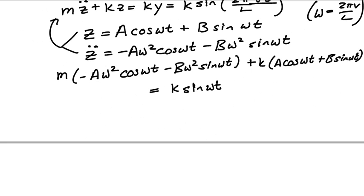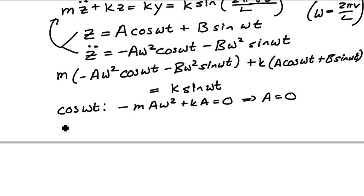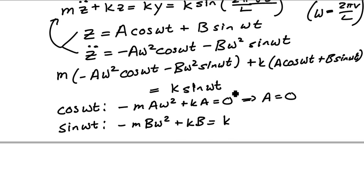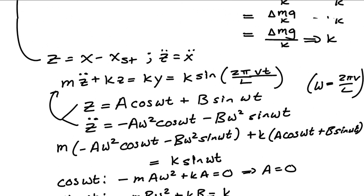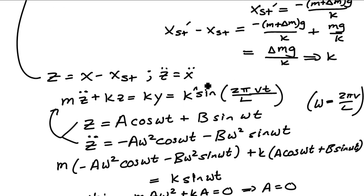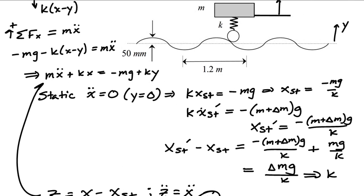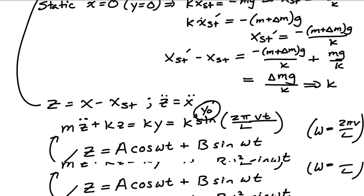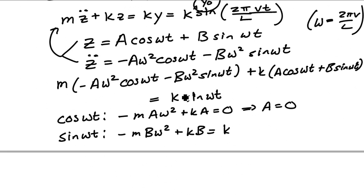Equating like coefficients: for terms multiplying cos(ωt), I get −mAω² + kA = 0, which gives A = 0. I should note that I initially omitted the road amplitude y_naught — apologies for that brief omission. For terms multiplying sin(ωt): −mBω² + kB = k y_naught, so B equals k y_naught divided by (k minus m ω²).